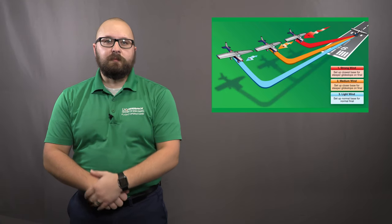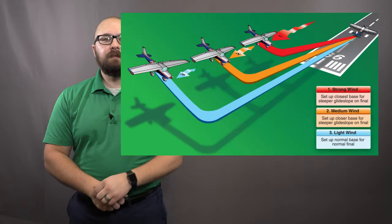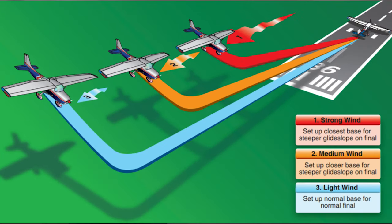The next thing to think about is how to adjust the base leg depending on winds. This means that if you are expecting a high headwind component on final, turn your base early, well before 45 degrees to the aim point. I call this playing the win game. The opposite is true if we have no headwind component on final. We will turn base further away from the runway. The Airplane Flying Handbook has a great picture explaining why we do this.